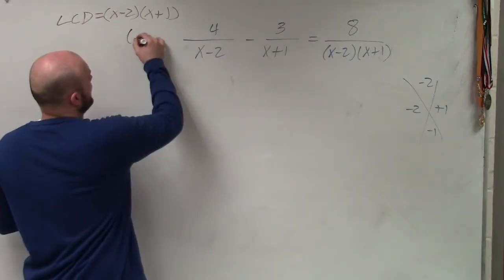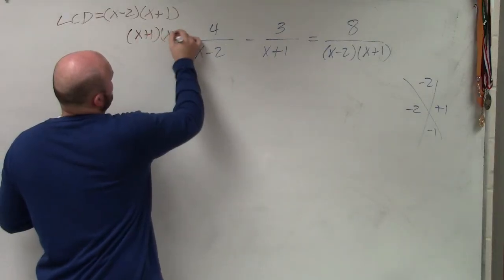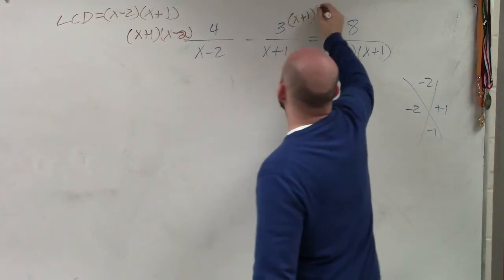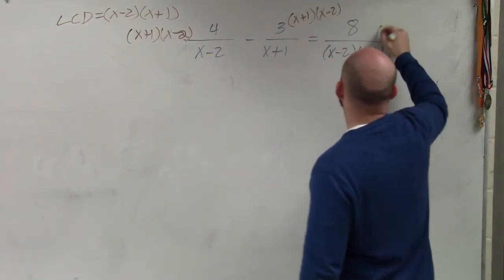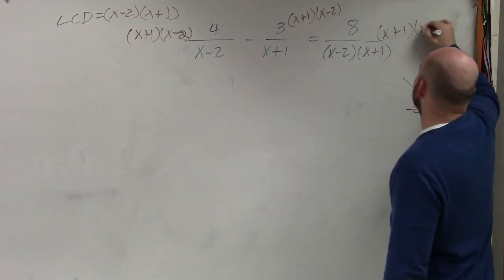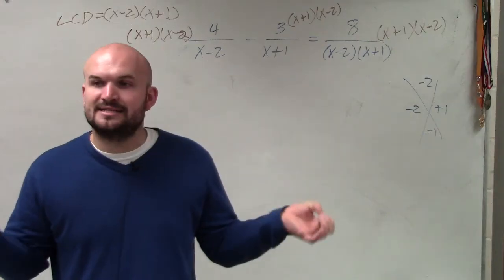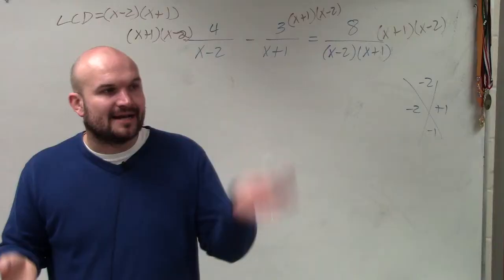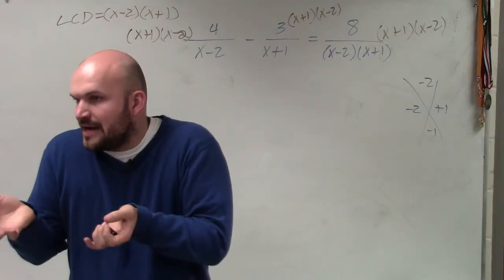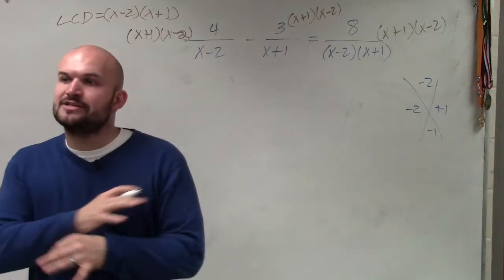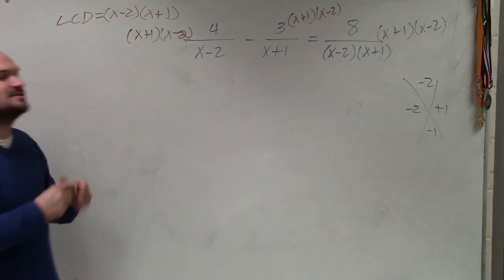So I have x plus 1 times x minus 2, x plus 1 times x minus 2, x plus 1 times x minus 2. When you're adding and subtracting fractions with unlike denominators, you've got to add on the top and bottom so you have common denominators, because we're trying to group them together. In solving, we're trying to eliminate. So you're just going to take your LCD and multiply it by everything.